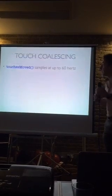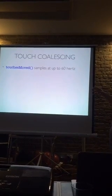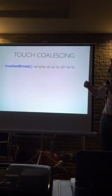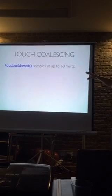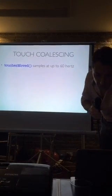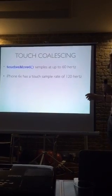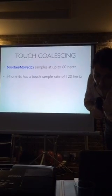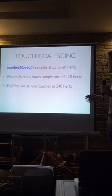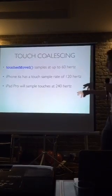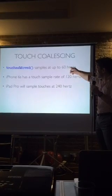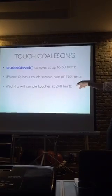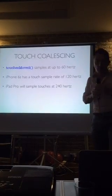The final thing that's not quite 3D Touch but is quite important is touch coalescing. Touches moved happens in sync with the refresh rate of the monitor, which is 60Hz. If you're doing touch sampling on an iPhone 6S, it actually does a sample rate for touch at 120Hz. And in the next month, if you're using an iPad Pro, that will sample at 240Hz. So you can already see that touchesMoved at 60Hz is going to miss out on at least half of the touches on the 6S and a quarter on the iPad Pro.